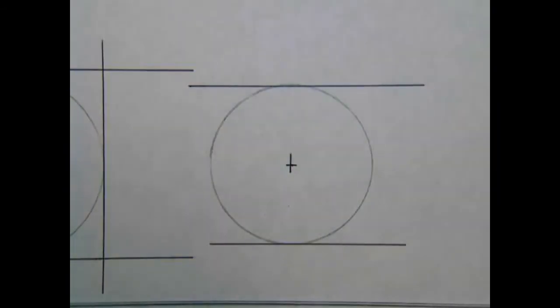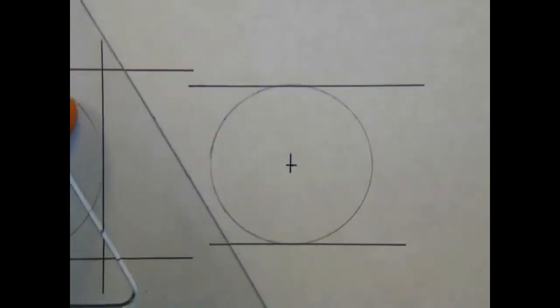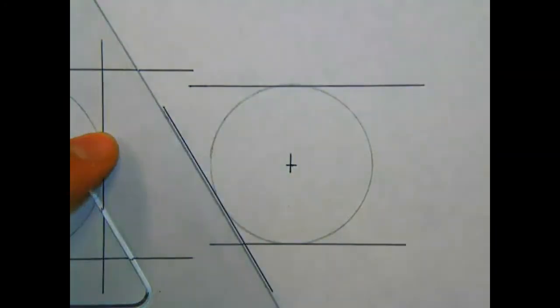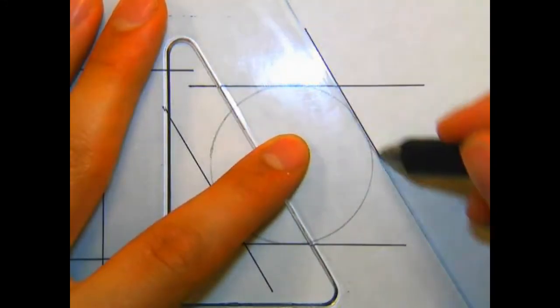Instead, we'll use our triangle, the 60-degree side, to draw tangent lines to the circle using the 60-degree side of our 30-60-90 triangle.